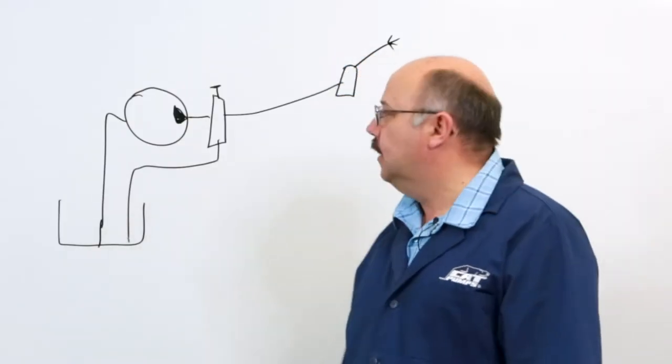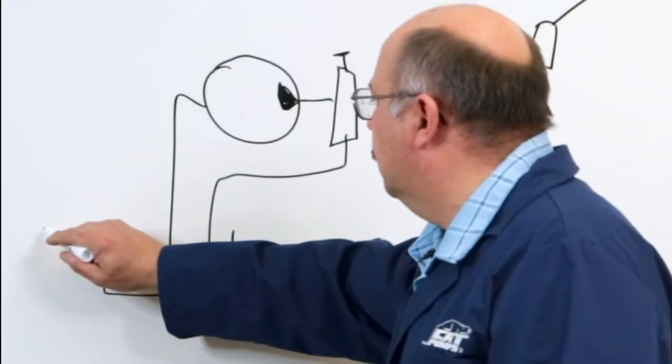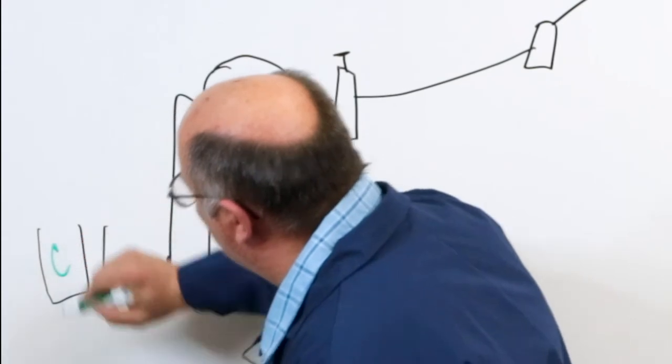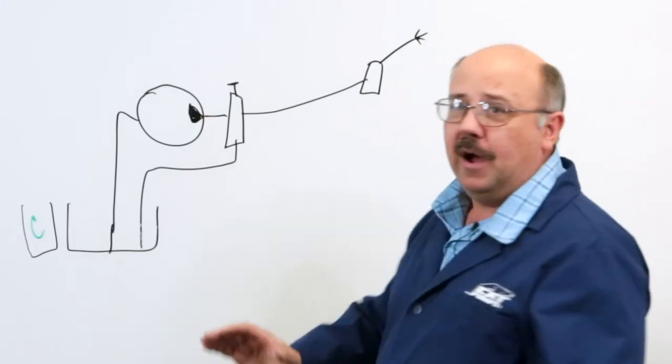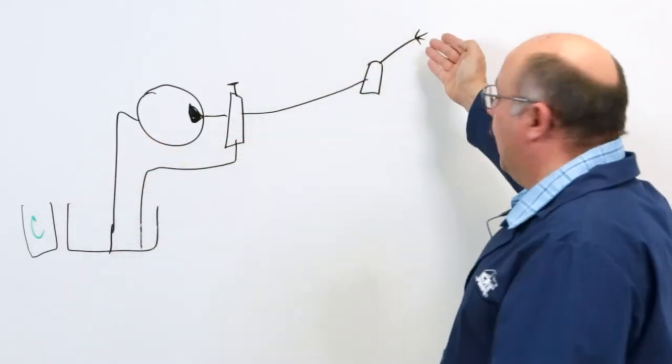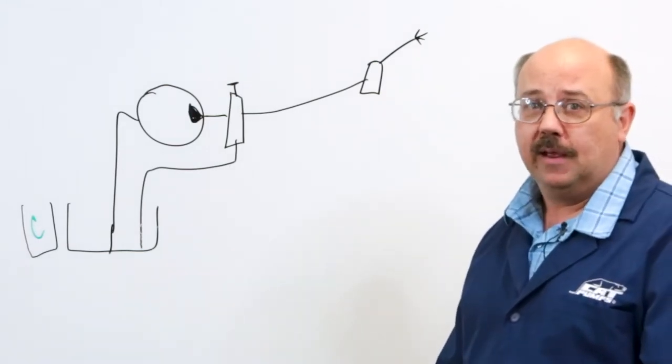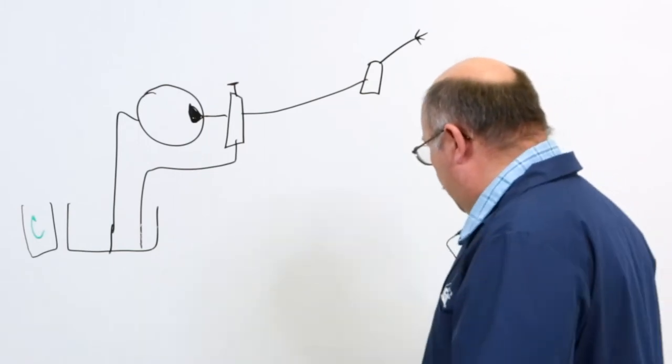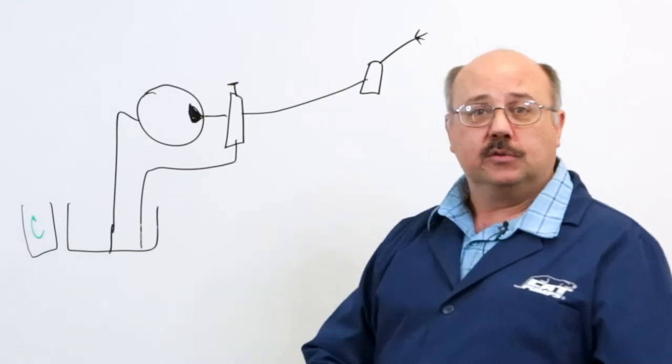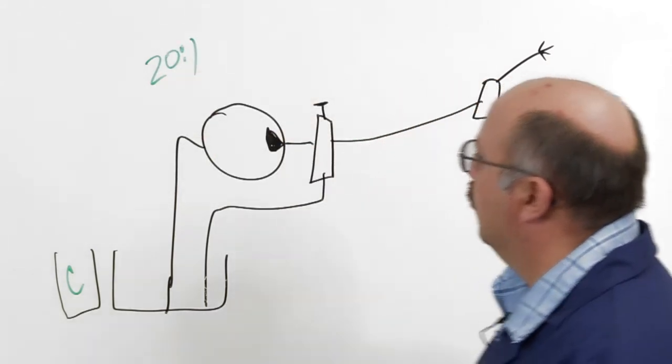We'll go over different ways to do that in a minute, but what we want to do now is we also have a tank here of chemical. Let me put a C there so we understand what the chemical is, and somehow we want to get this chemical into this water system so that it can come out at the spray nozzle and enhance what we're cleaning or deodorizing or whatever the application may be. So let's just say we wanted to work with a 20 to 1 ratio. In other words, we want 20 parts water, one part chemical. I'm just going to put that up here so we remember what we're working with, 20 to 1.